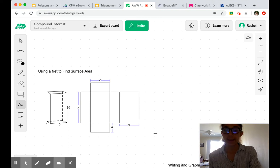This video is for the Apex topic using a net to find surface area. The surface area of a three-dimensional object refers to how much space the outside of it takes up.